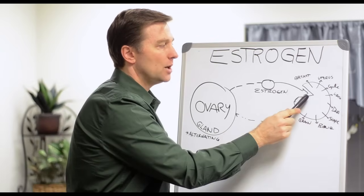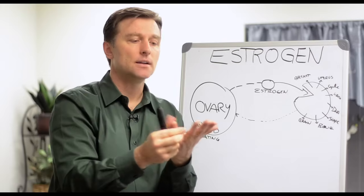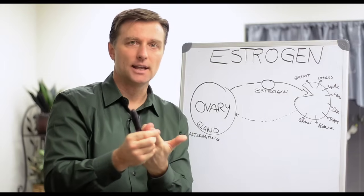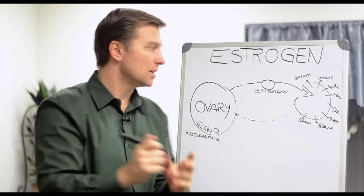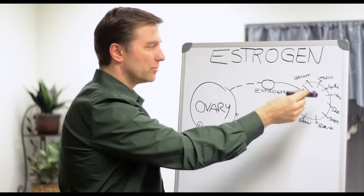So estrogen has receptors in the liver, in the uterus, in the bone, in the brain, in the ovary. So it can even go from ovary to ovary as well.